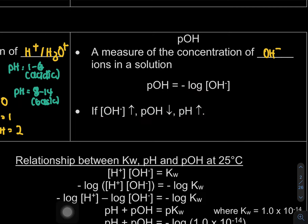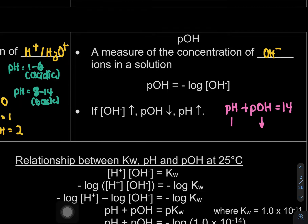pH and pOH can be related by the equation: pH + pOH = 14. So if pOH is low, pH will be high, because when you add the two values together they equal 14.